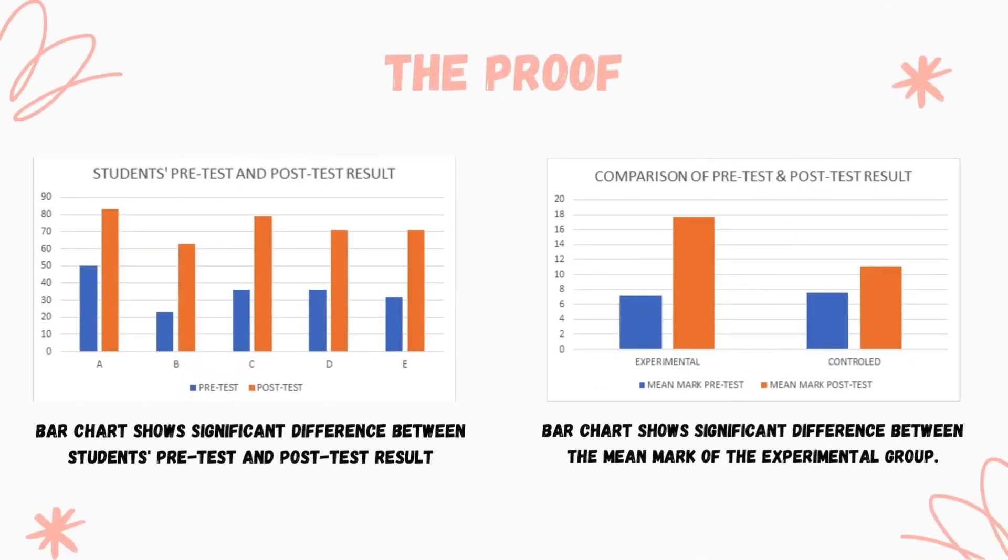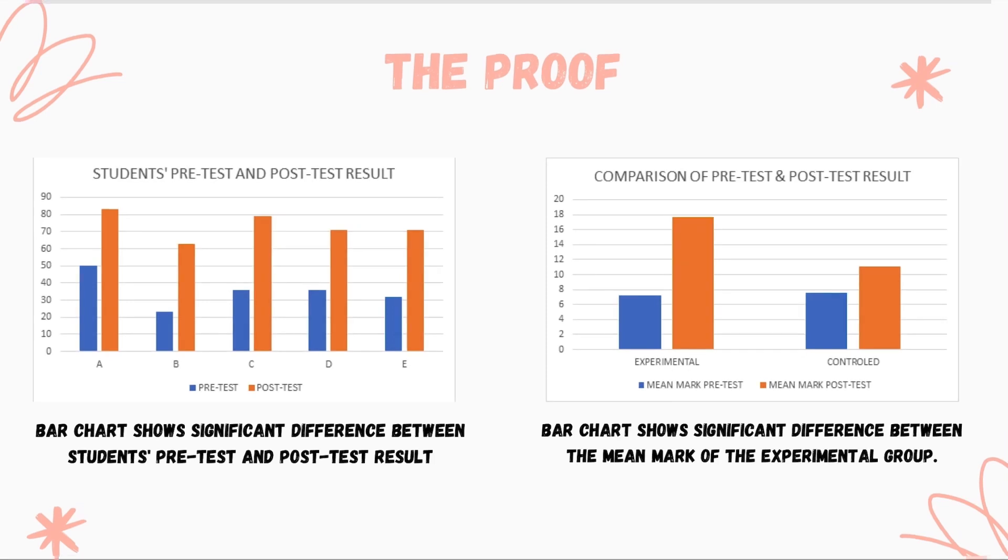This is proof showing the effectiveness of this F3R model in students' performance in class. The left-hand side bar chart shows significant improvement of students' marks for pre-test and post-test after the intervention using the F3R model. The right-hand side bar chart shows significant improvement of mean marks for the experimental group compared to the control group.